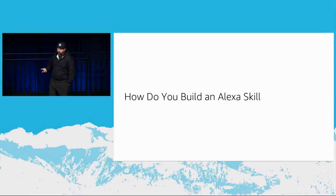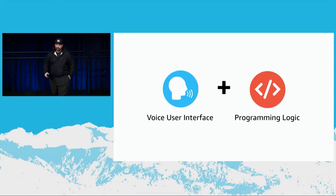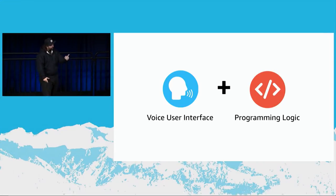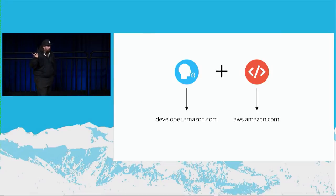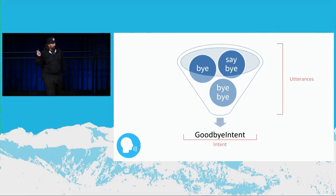I want to talk a little bit about how you actually build one of these. Like any other piece of software, it has a user interface and programming logic — a front end and a back end — except the front end is more of an 'ear end' and 'voice end': what you say and what you hear. The programming logic is just code. In this demo, I'll build my voice UI using developer.amazon.com and post my logic in AWS.